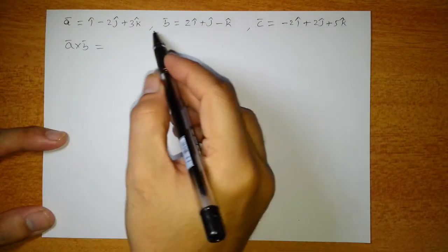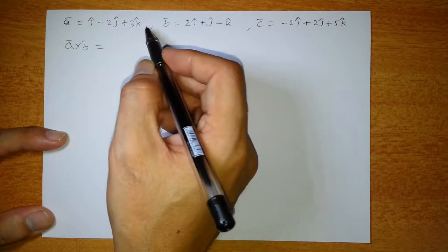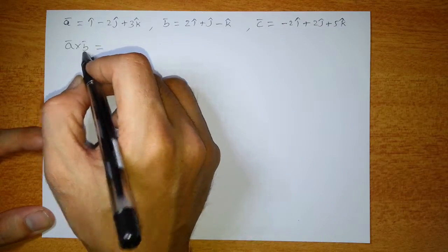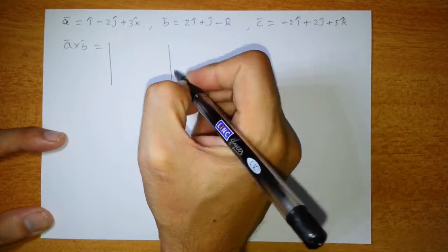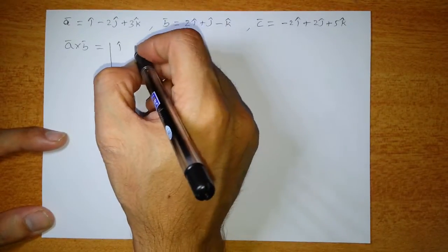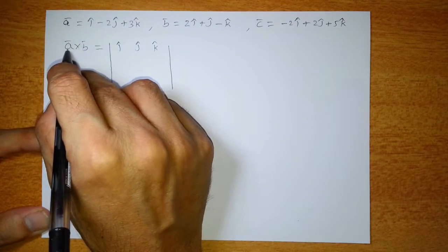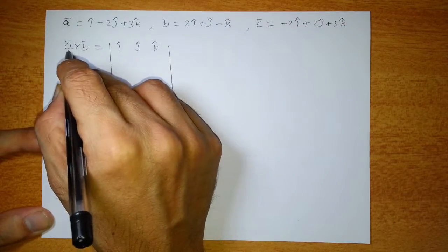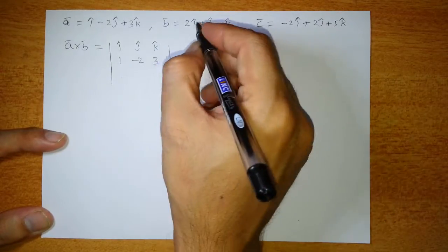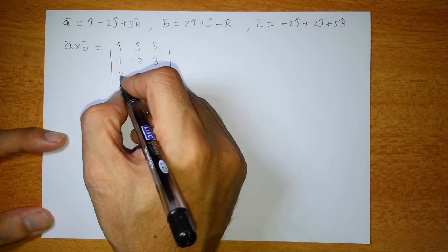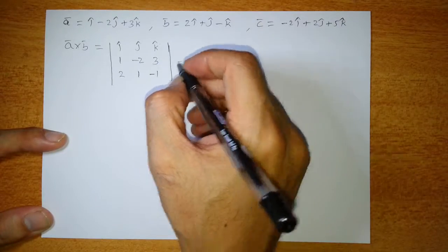Now let's find the cross product of more complex vectors with three components each in i, j, k. We have to find A cross B using the determinant method. Set up a 3×3 determinant with i, j, k in the first row. Write the components of the first vector A — which are 1, −2, 3 — in the second row, and the components of the second vector B — which are 2, 1, −1 — in the third row.